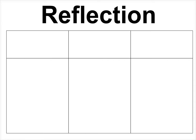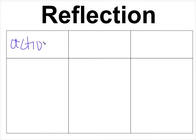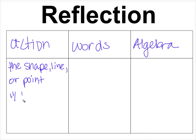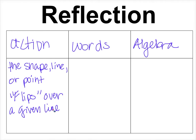We're going to take a look at reflections today. On your notes, find the part with the empty boxes. In our first box we have Action, then Words, and finally Algebra. For the Action: a reflection is when a shape, line, or point flips over a given line. A reflection is just a mirror image.